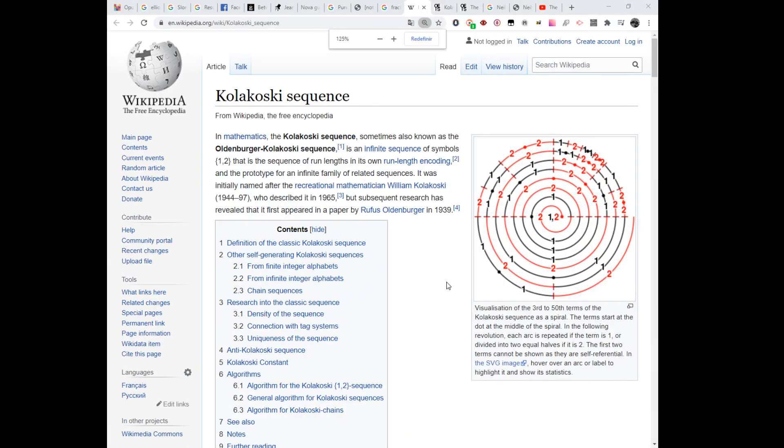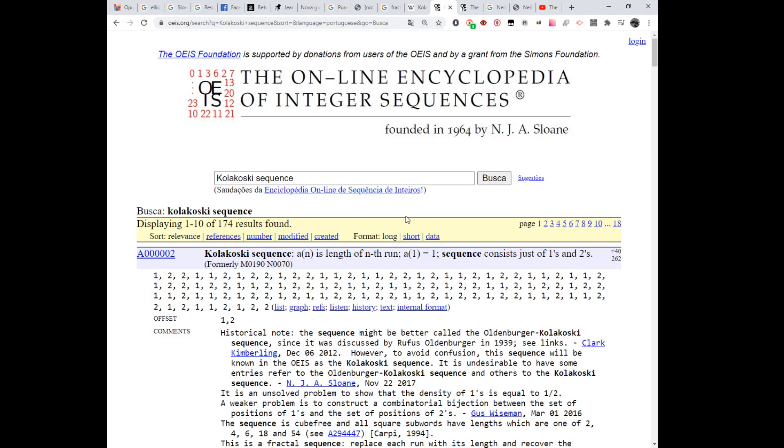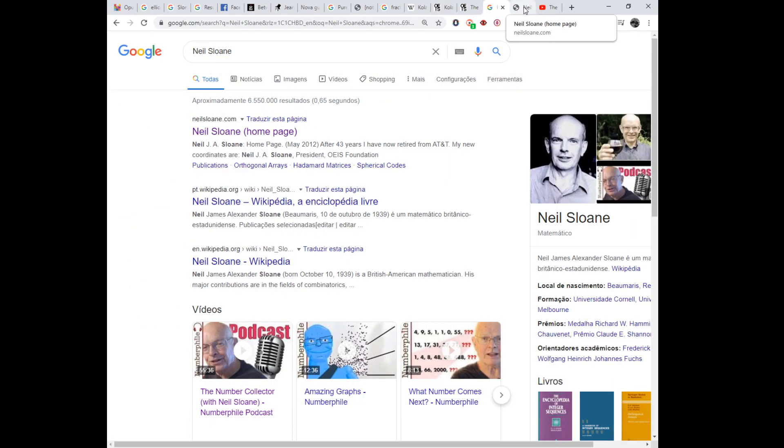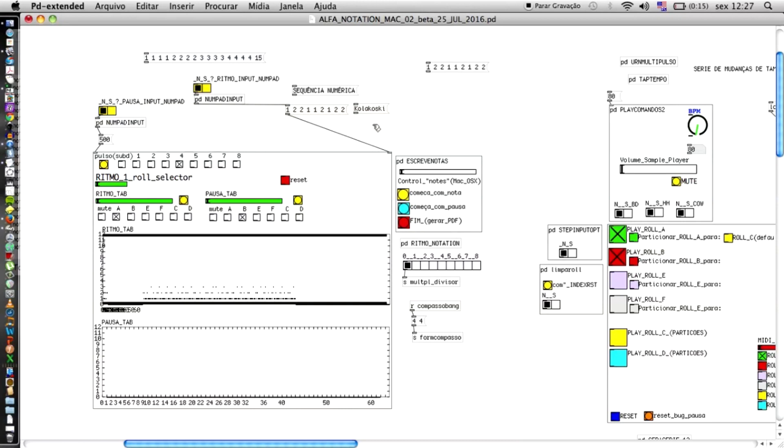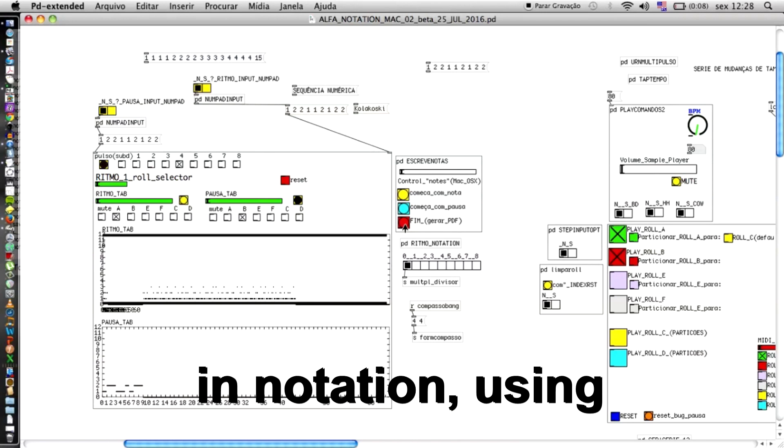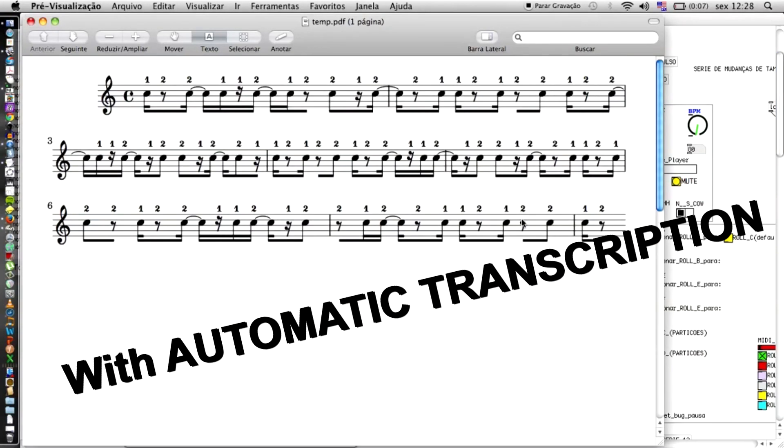As a last example, I'm going to take a fractal sequence number named the Kolakowski sequence, that I took from the online Encyclopedia of Integer Sequences, founded by the great mathematician Neil Sloane. Let's take the same Kolakowski sequence and use it as the sequence of integers and also as the sequence of rests. As a result, a more complex alternation between rests and notes.